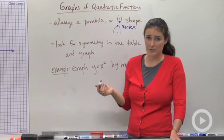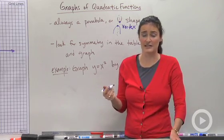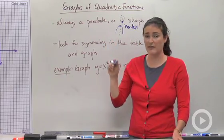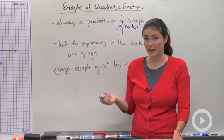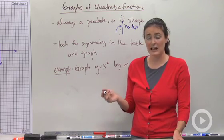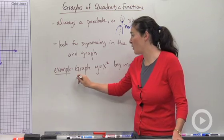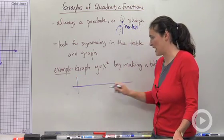So in math, anytime you're asked to graph anything, whether it's a line or an absolute value or a curvy thing or whatever, you can always make a table of values. What that means is you pick some x numbers, then you substitute them into your equation one at a time. It's always a good idea to use some negatives and positives.